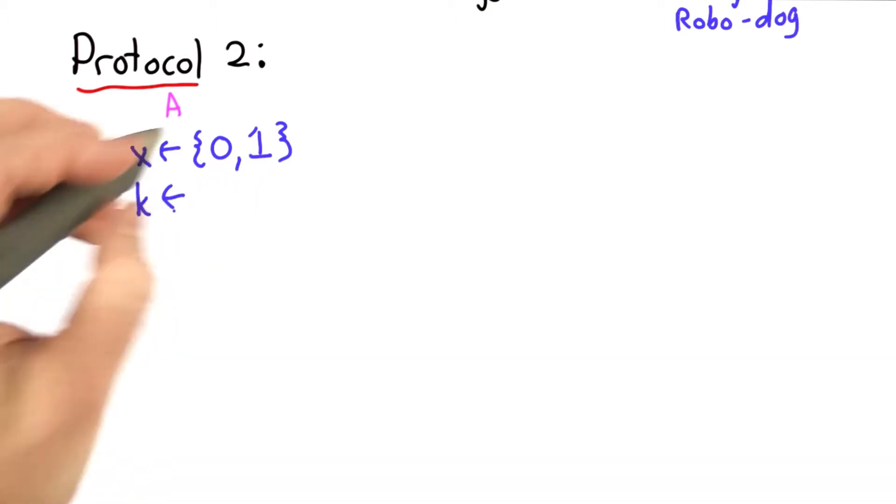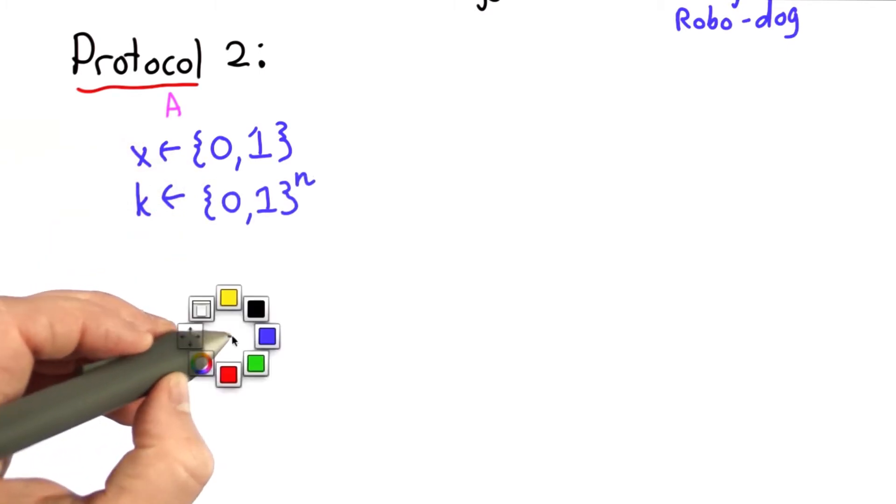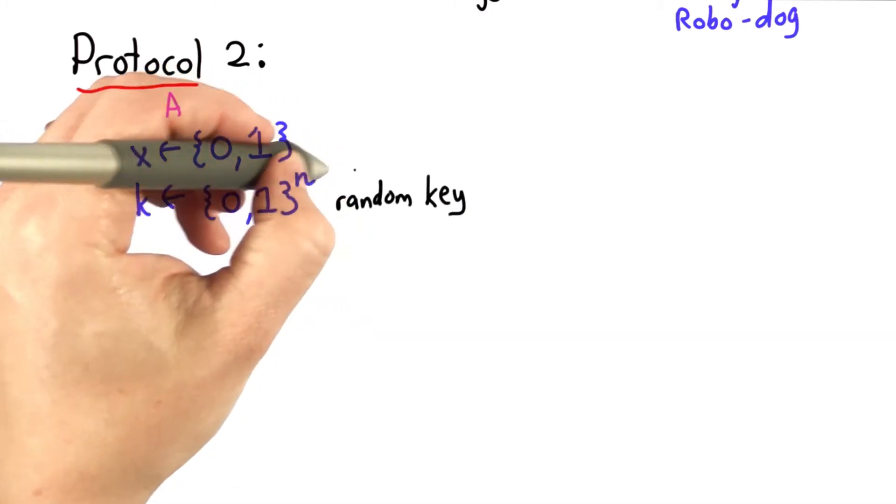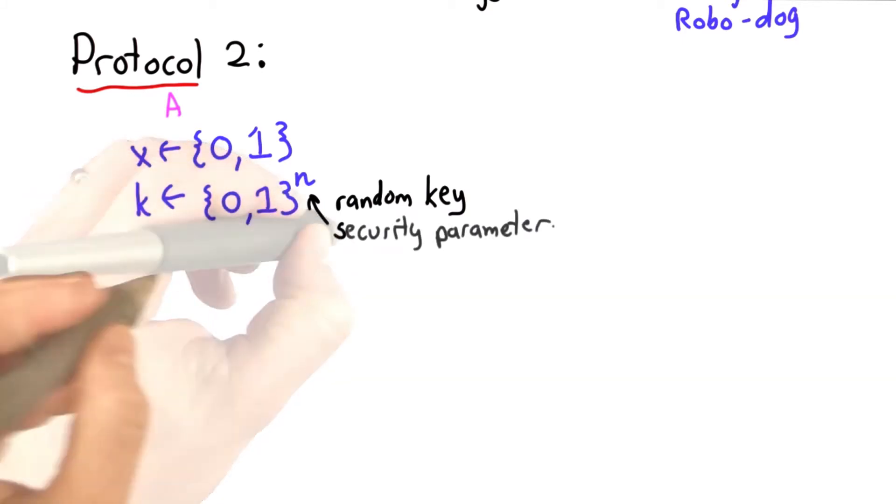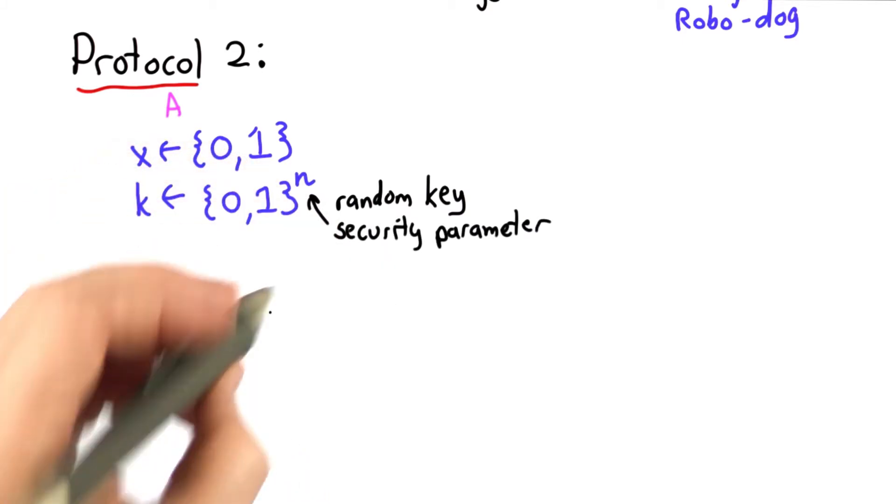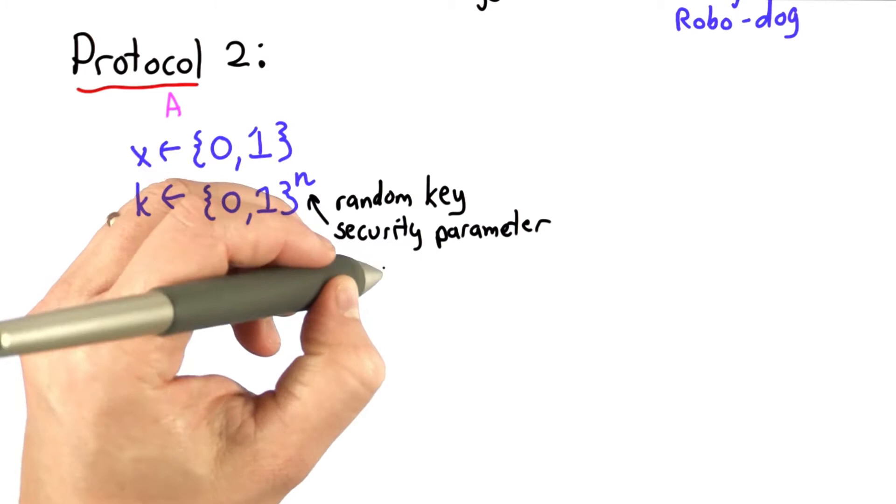She'll also pick some key of length n. This is going to be a random key, and n is a security parameter. The higher the value of n, the larger the space of possible keys, the more secure the protocol will be.